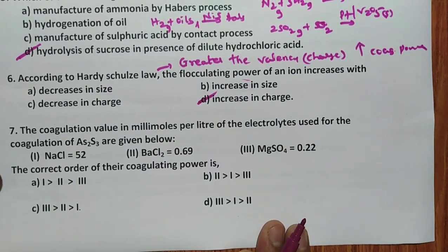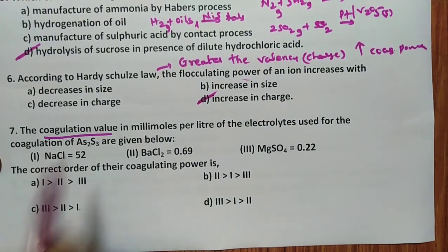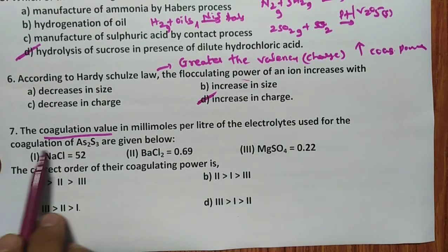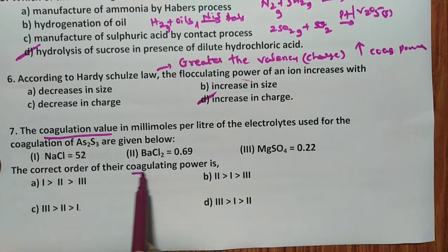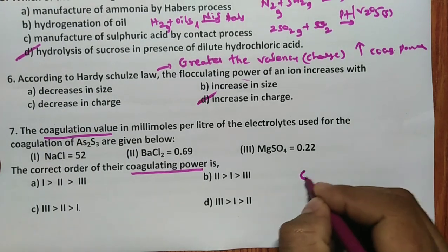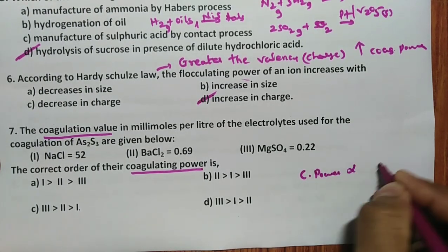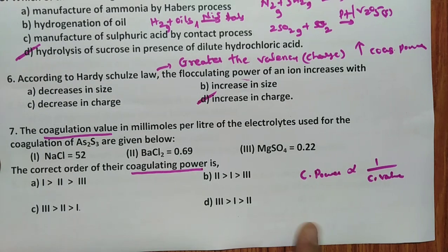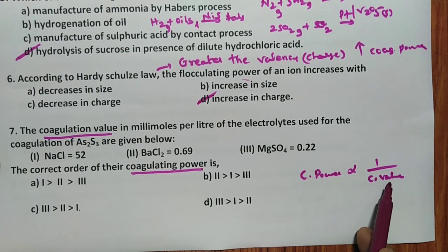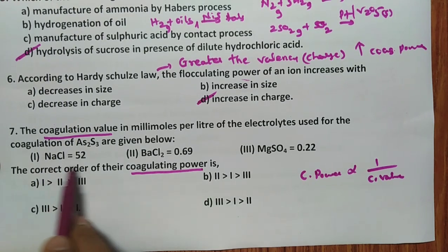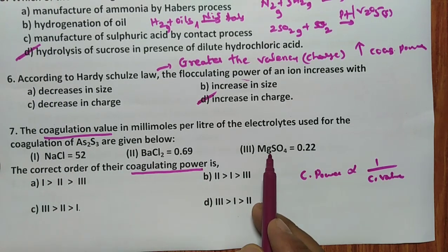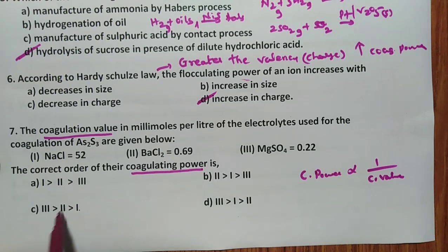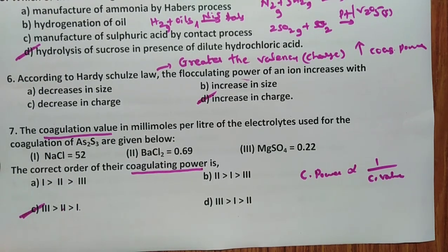Coagulation value in millimoles per liter is given, used for the coagulation of As2S3 and the correct order of coagulating power they are asking. What is the relationship? Coagulating power is inversely related to coagulation value. Coagulation value is least, coagulation power is more. Out of the four, coagulation value is least for MgSO4 at 3, then 2, then 1. So the answer for this question should be C.